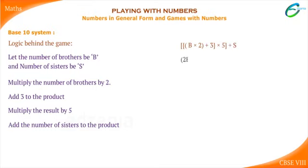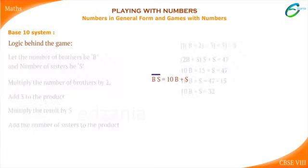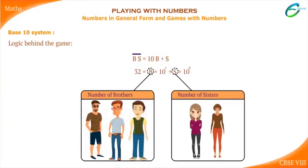Simplifying: (2B + 3) × 5 + S = 47. That gives 10B + 15 + S = 47, so 10B + S = 47 − 15, which means 10B + S = 32. Here 'BS' does not mean B times S — it represents the two-digit number with B in the tens place and S in the units place. So Manoj, by looking at the two-digit number 32, could tell that Raj had three brothers and two sisters.